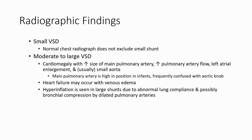Small VSDs usually have a normal chest radiograph, and a normal radiograph does not exclude a small shunt. Moderate to large VSDs show cardiomegaly with increased size of the main pulmonary artery, increased pulmonary artery flow, left atrial enlargement, and usually a small aorta. Air trapping may occur with venous edema. Air trapping is seen in large shunts due to abnormal lung compliance and possible bronchial compression by the dilated pulmonary artery.